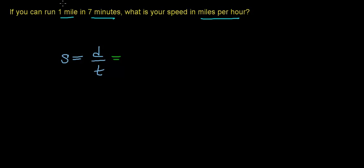Now, in this case, we're told that you can run a distance of one mile in a time of seven minutes. So this represents your speed in miles per minute.